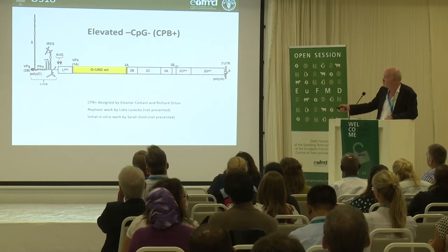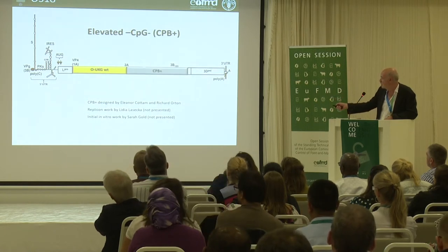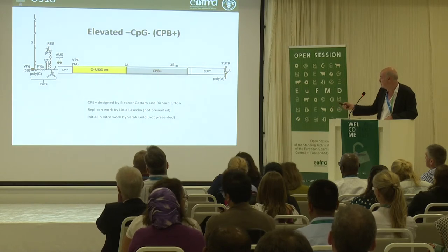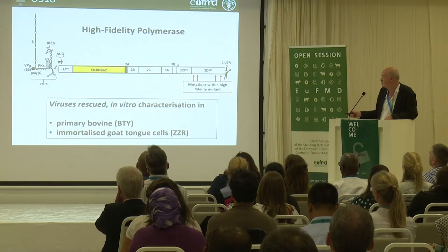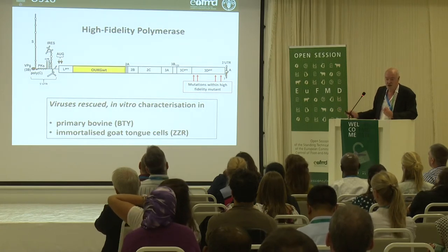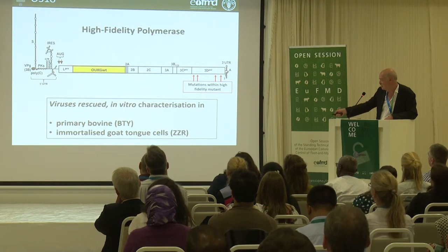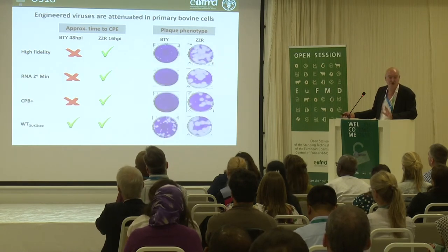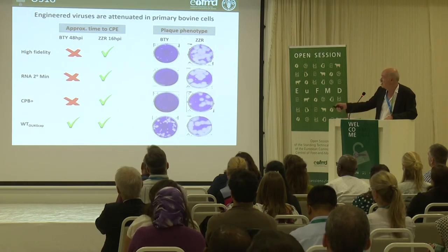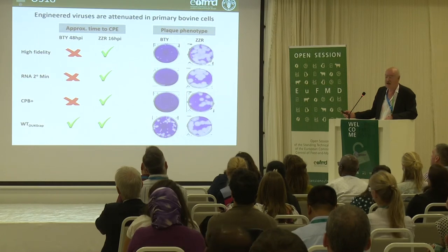At Perbright, they've made another series of viruses with elevated CpG in a specific region of the genome — calling this CpG+. They've made another virus affecting potential secondary RNA structure in that region, and also a construct with mutations in high-fidelity replication — the polymerase is much less error-prone during replication than wild-type. These viruses have been rescued and characterized in primary bovine and immortalized cell lines. What one sees — not just for foot and mouth but for many other viruses using this strategy — is that they don't grow in primary cells but grow well in immortalized cells, many of which have lesions in their innate immune systems.